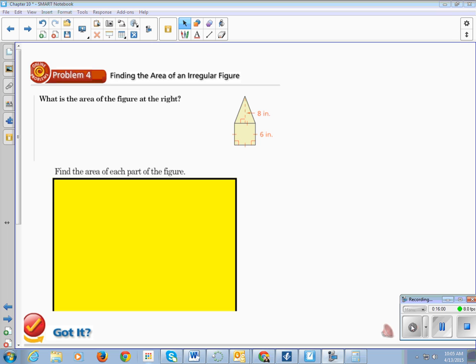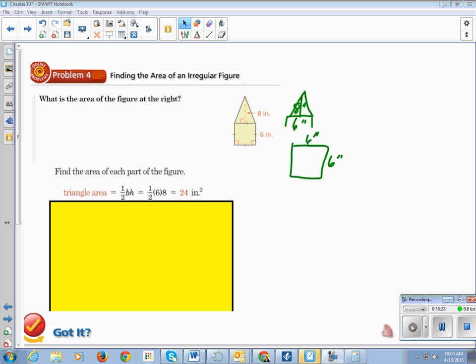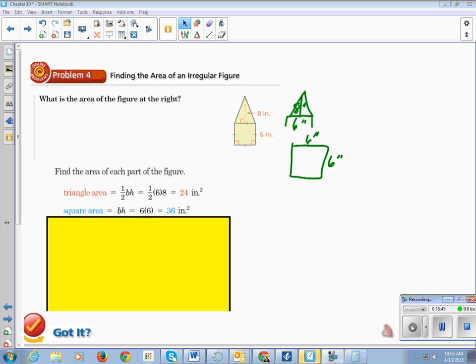All right. Problem number four. What is the area of the figure at the right? So we're going to find the area of each part. So we've got this nice little triangle that has a height of eight. And what's the base of this little triangle, this little half? Six. And then we have a square whose all his sides are six. So remember the area of a triangle is one half base times height. So you've got one half times six, which is our base, times eight, which is the height. And that gives you 24 square inches. Take a look at the square area. Square is base times height. Six times six, which is 36. Add the two together and you get 60 square inches this time for real.